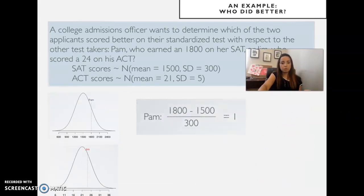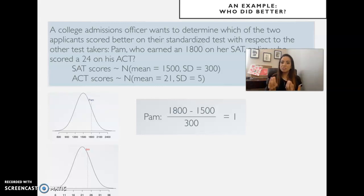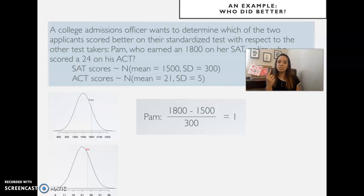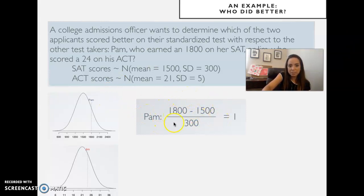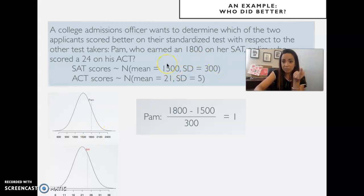Pam's score was one standard deviation above the mean. A standard deviation is a way of normalizing and making the score relative to something — it's a standardized score. If I subtract the mean from the score and divide by the standard deviation, I get exactly how many standard deviations above the mean that score is.